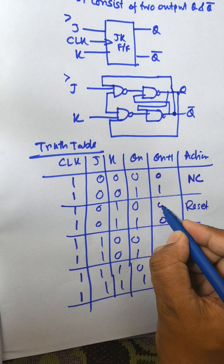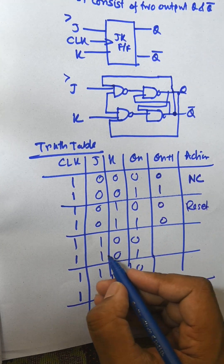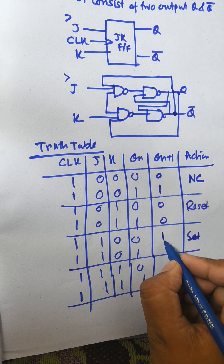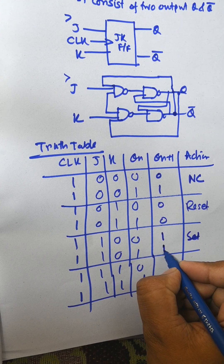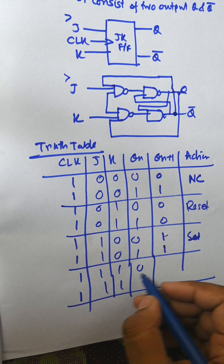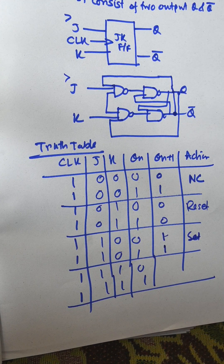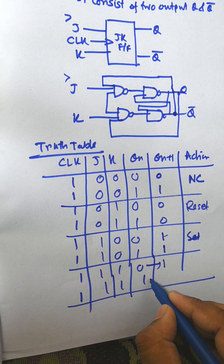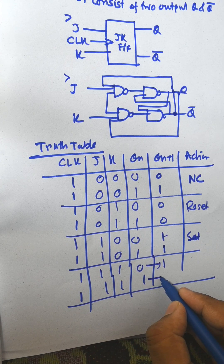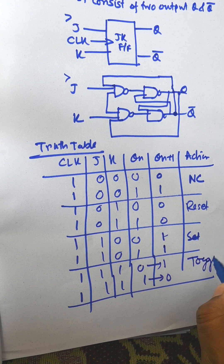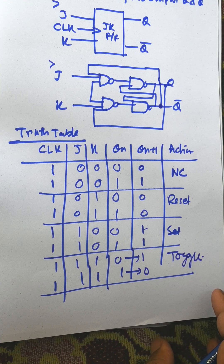For input 0 0 this is no change; 1 0 means set — 0 to 1 and 1 remains 1; 0 1 means reset — 1 converted to 0; and 1 1 means toggle — 0 to 1 and 1 to 0. This is the concept of the JK flip-flop in digital electronics. Thank you very much for watching this video.